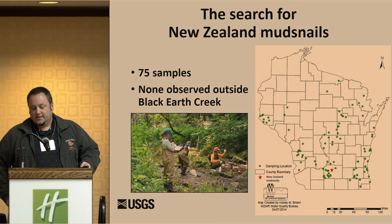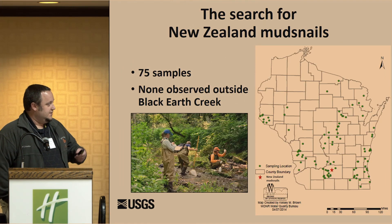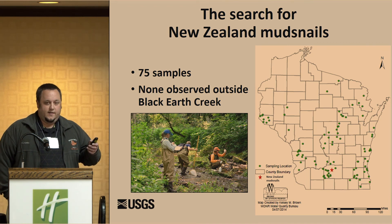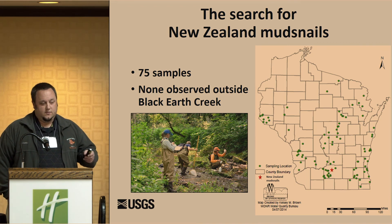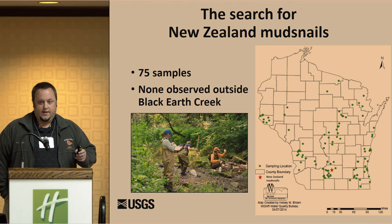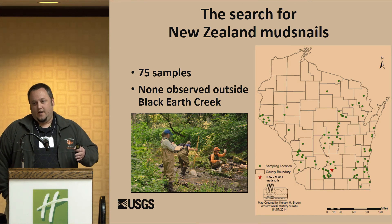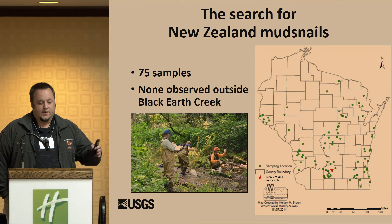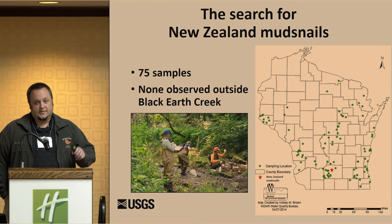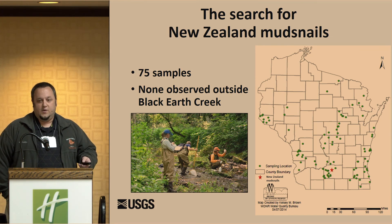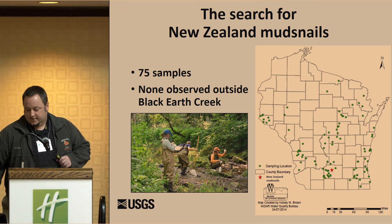Following that success, we surveyed 75 samples across Wisconsin and also obtained samples from Illinois and Iowa. We found that New Zealand mud snails were not outside Black Earth Creek from the sites we tested, though one more stream in Wisconsin has since been found to have them.